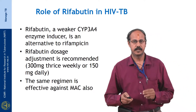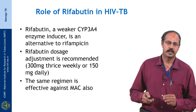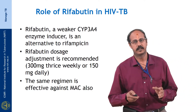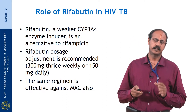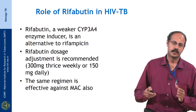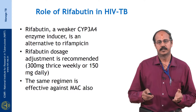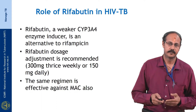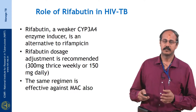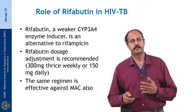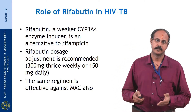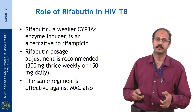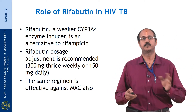Rifabutine is a weaker CYP3A4 inducer and can be an effective alternative to rifampicin in HIV-TB co-treatment. Toxicities are more or less similar except for choreoretinitis and thrombocytopenia. Dosage must be adjusted with respect to each protease inhibitor. The usual recommended dosage is 150 mg daily or 300 mg thrice weekly, though international standards have gone up to 300 mg daily. Additionally, rifabutine combined with INH and ethambutol is more effective than rifampicin for patients with co-existing MAC or Mycobacterium avium intracellulare.